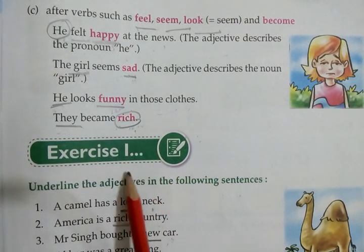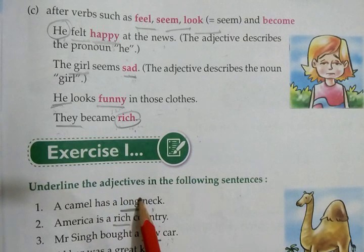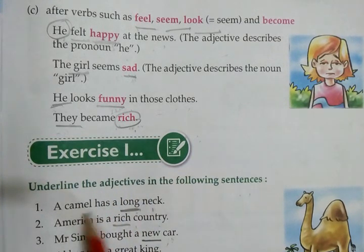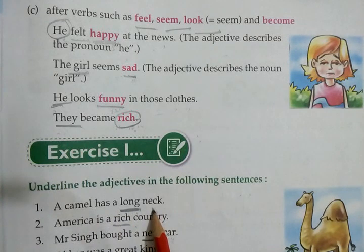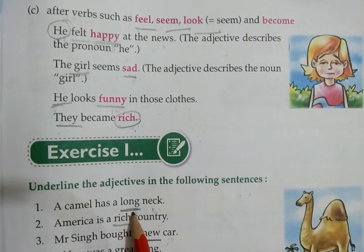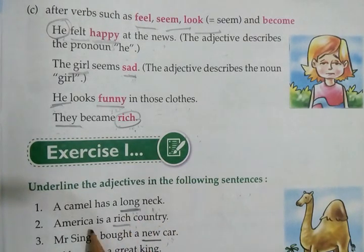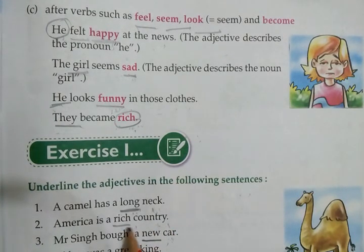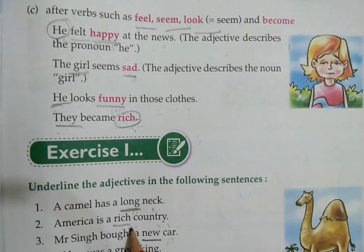Let's do exercise. Underline the adjective in the following sentences. First: 'A camel has long legs.' Long is adjective. Second: 'America is a rich country.' Country kaisi hai? Rich — rich is adjective.